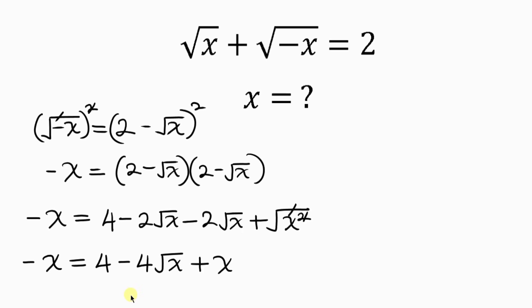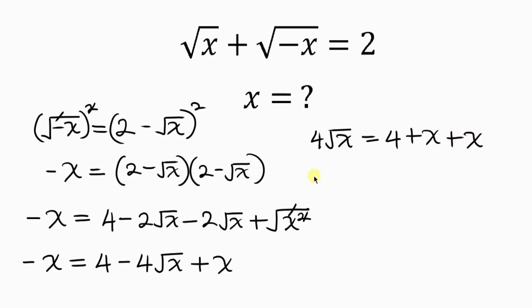Our next step will be to get rid of this square root, but in order to do that I have to isolate it. So I'm going to move negative 4 root x to the left hand side and move negative x to the right hand side. Moving negative 4 root x to the left makes it positive 4 root x, equal to 4 plus x, and when negative x crosses to the right it becomes plus x.